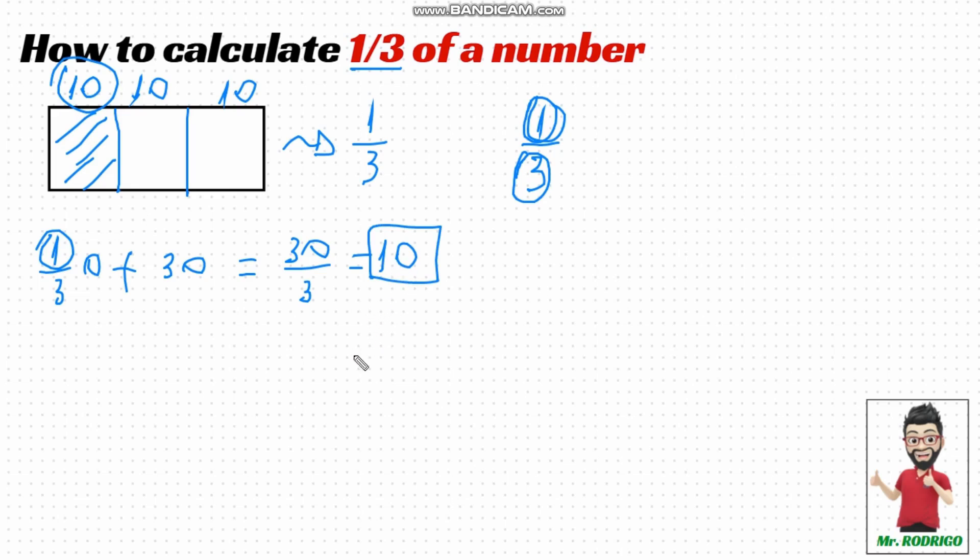From this, we can conclude that calculating one-third of any number is simply taking that number and dividing it by 3. Let's do one more example here. What is one-third of 24? So, we're simply going to take the number 24 and divide it into three equal parts. 24 divided by 3 equals 8, which means one-third of 24 is 8.